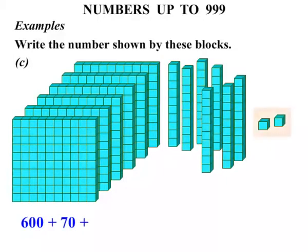Plus, and just counting in ones. Well, what have we got? 1, 2. So let's add these numbers. 600 plus 70, that's 670, plus another 2, equals 672.